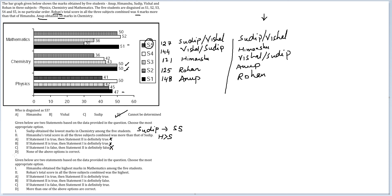Therefore, we would have to mark Option D as the final answer. I understand people don't like marking 'cannot be determined' and 'none of the above' in consecutive questions. But if the data leads you there, back yourself. If you are reaching that result, that is the answer.